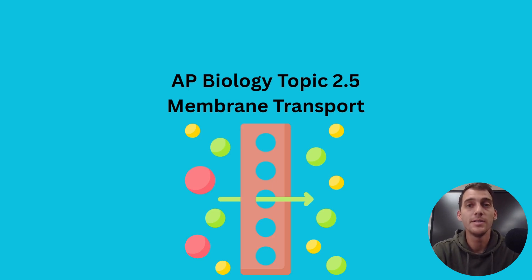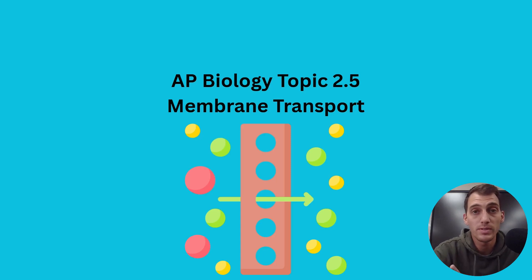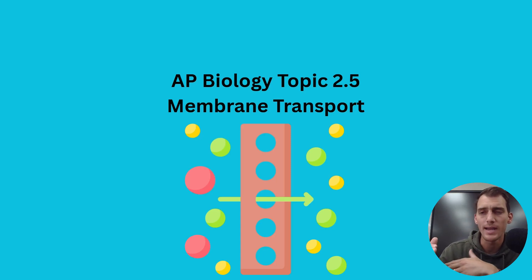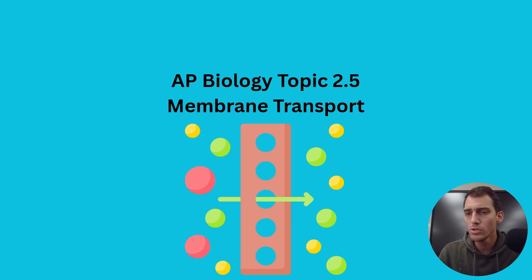Hi everybody, it is your AP Biology teacher Mr. Poser. Today we're getting into topic 2.5, which is on membrane transport. Topic 2.3 was about the structure of the plasma membrane — how it's a phospholipid bilayer, a fluid mosaic with embedded proteins. That structure allows it to be selectively permeable, which was topic 2.4 — it can choose what goes in and out.